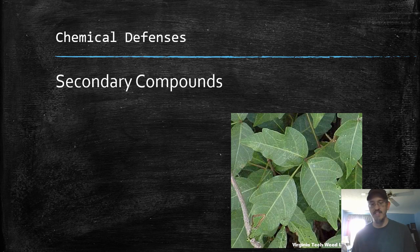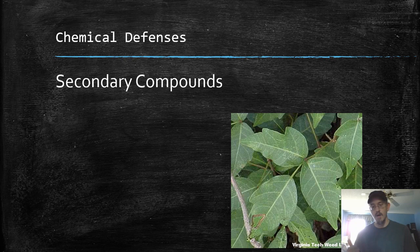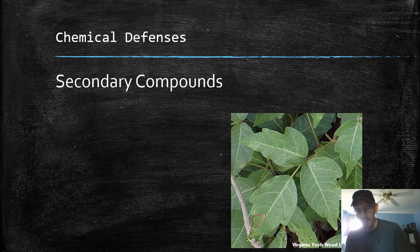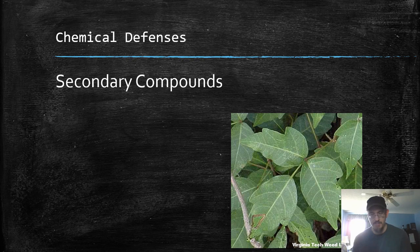Secondary compounds are often for defense or attraction of pollinators and things like that. This is poison ivy — the poison on there is a secondary compound. Plants make lots of these things. Nicotine — that's a pesticide that kills insects that try to eat tobacco. Caffeine. Cocaine is made from coca leaves. Morphine. There are many others — ephedra, which is used to make ephedrine, or the fake version Sudafed. Plants make all kinds of different chemical compounds. These alkaloids often end in -ine, like cocaine, nicotine, ephedrine, and others. Plants make an abundance of these things.